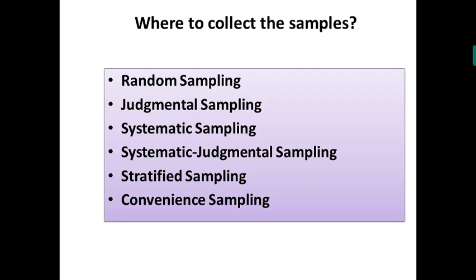Now let us go through each question. For 'where to collect the sample,' you reach the target population, and there is a way and a spot to collect the sample — we cannot collect according to our own wish. We must follow standard guidelines. The methods followed are: random sampling, judgmental sampling, systematic sampling, systematic judgmental sampling, stratified sampling, and convenience sampling.